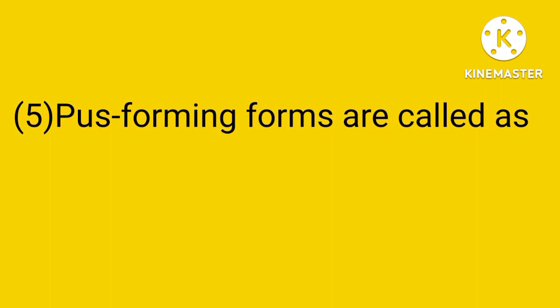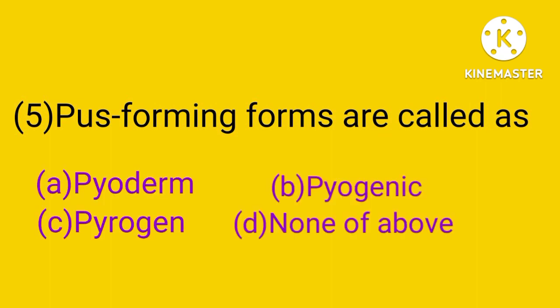Question number 5. Pus-forming organisms are called: pyoderm, pyogenic, pyrogen, or none of the above. The answer is B. Pus-forming organisms are called pyogenic.